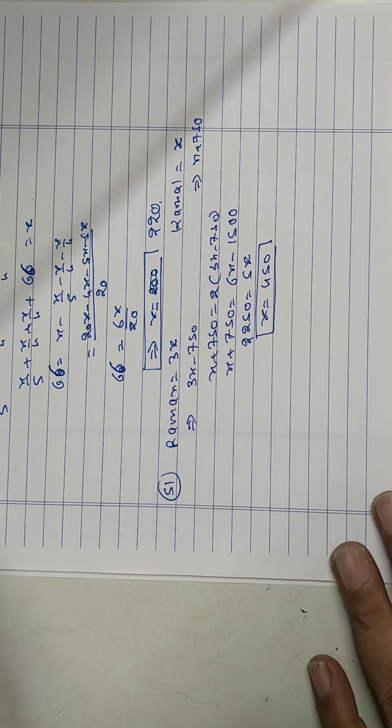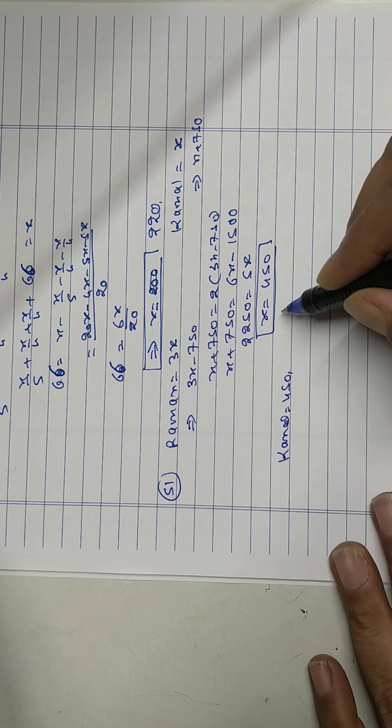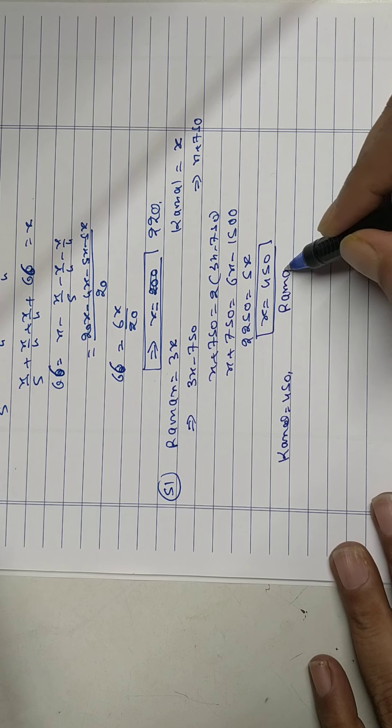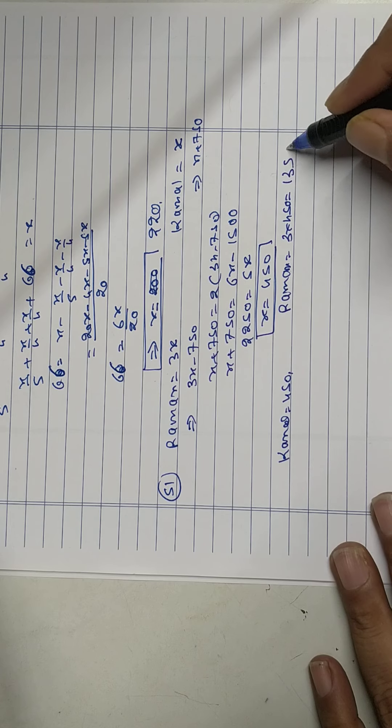So Kamal has 450. Raman thrice of 450 equal to 1350.